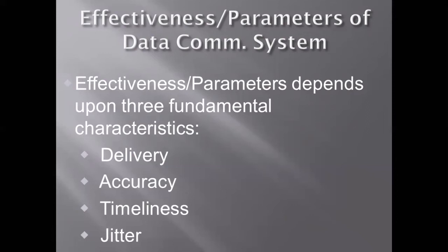Accuracy means that the data provided to the correct person must not be altered in transit. If data changes somewhere in the middle between sender and receiver, it is no longer accurate. The data received at the destination should match exactly what the sender transmitted through the transmission media — otherwise it is useless.